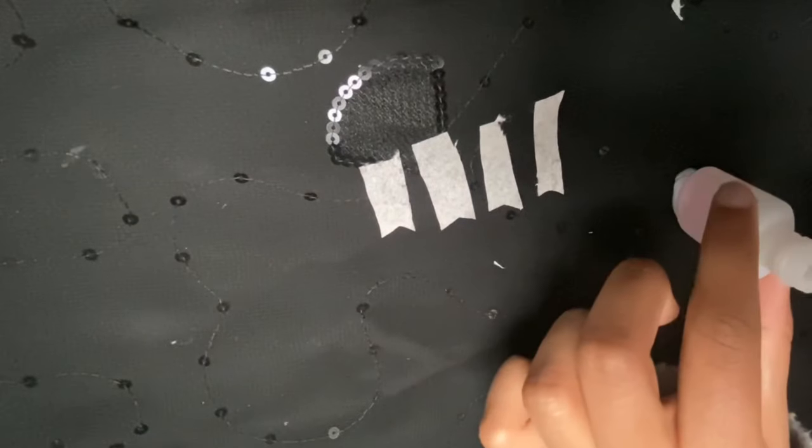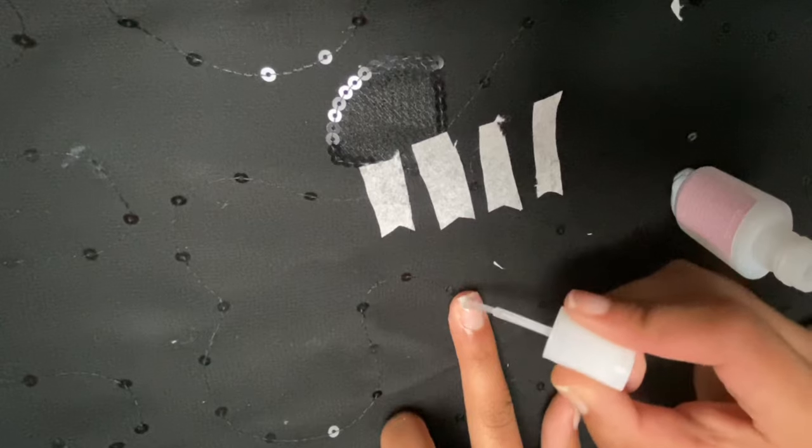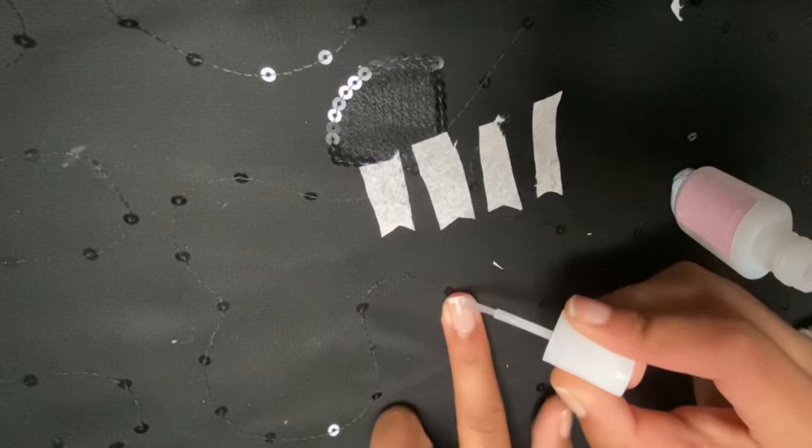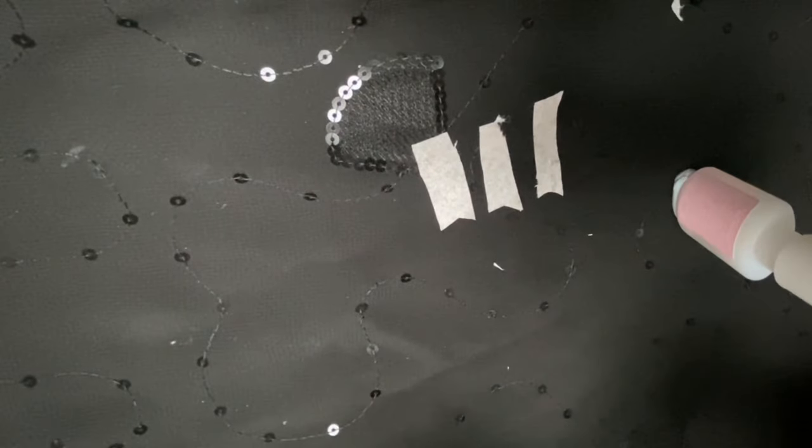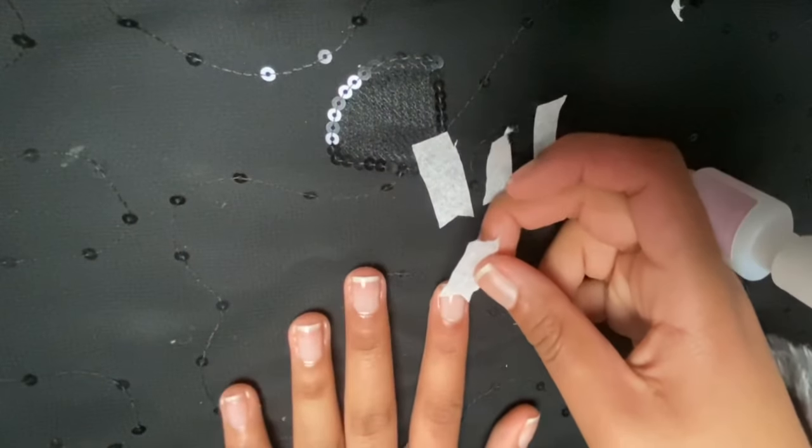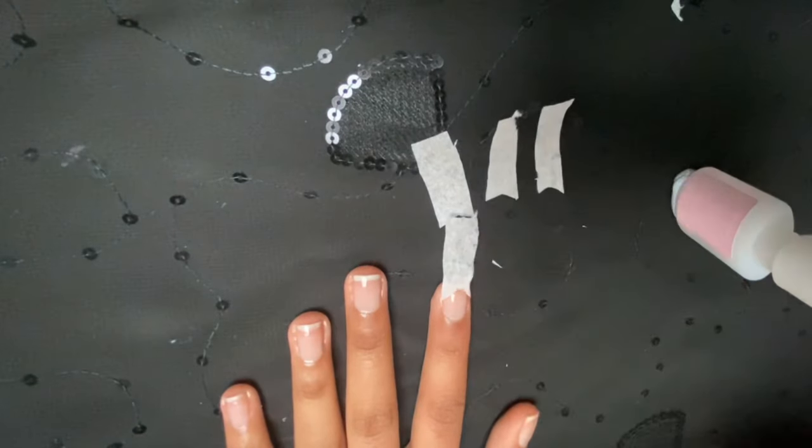Normally I'd attach them with base coat, but this time I wanted to try it with nail glue and I did not like it. It kind of went all over the place. Base coat is better so you have time to adjust it before it dries.